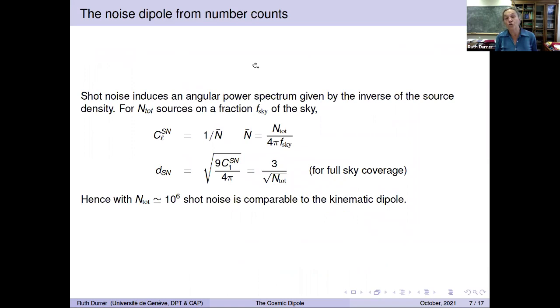But now what you also have, of course, is shot noise, since if you do number counts, we count a finite number of galaxies or sources. This introduces shot noise which is given by 1 over n-bar, where n-bar is the density, the angular density of sources. So it's the total number which we count divided by 4π in a full sky, and otherwise we have to divide also by the sky fraction. The dipole for an arbitrary C1 is given by this expression. For shot noise, it gives 3 over square root of n-top for full sky coverage. For example, if n-top is 10^6, the shot noise is comparable to the kinematic dipole. I think this is also an important small result to keep in mind.